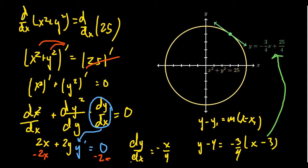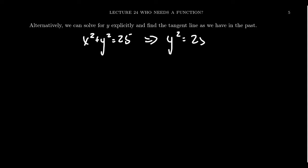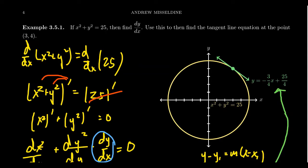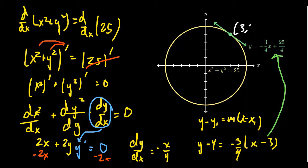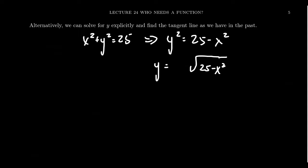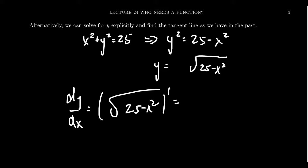Now let's compare with the old-fashioned explicit approach. Starting from x squared plus y squared equals 25, we solve for y: y squared equals 25 minus x squared, so y equals plus or minus the square root of 25 minus x squared. Since the point (3, 4) is on the upper semicircle, we take the positive square root. Now to find dy/dx, we differentiate the square root of 25 minus x squared using the chain rule, since we have a function inside a function.